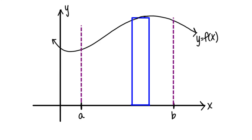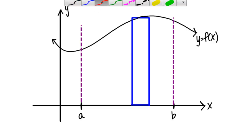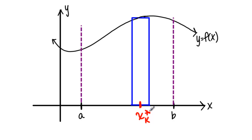We're going to talk about the area between curves. Previously, you learned about how to find area under a curve. You found that you could divide a region from A to B under a curve F of X up into small rectangles. And for each rectangle, you could look at a point in that rectangle, X sub K star, and then look at the height of the rectangle to be F of X sub K star.